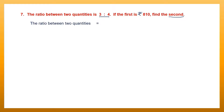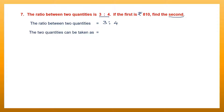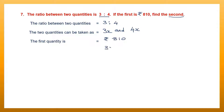The ratio between two quantities given in the question is 3 is to 4. Now let us take the two quantities to be 3x and 4x from the ratio 3 is to 4. Now the first quantity is already given to us as 810, and we have taken the first quantity to be 3x.